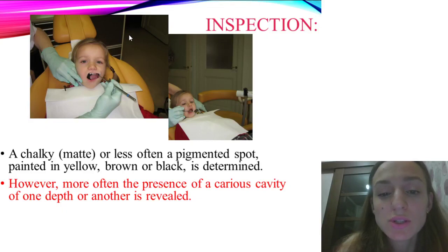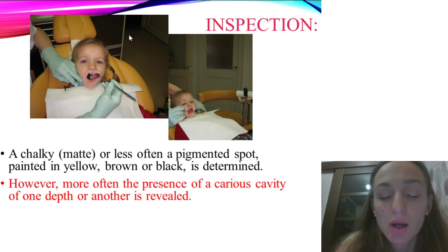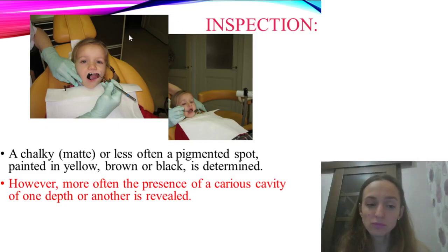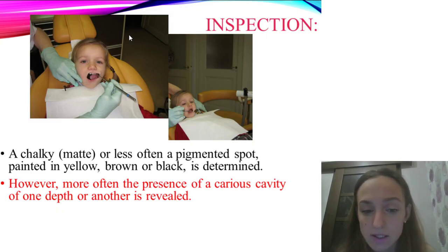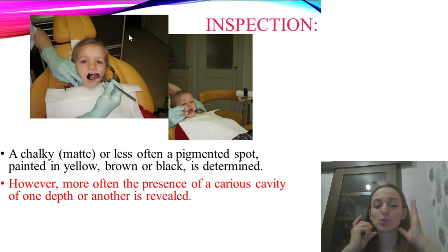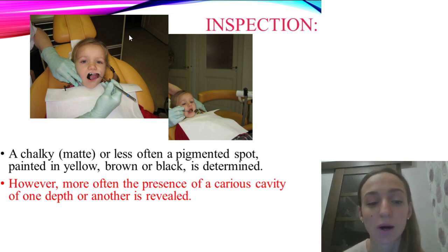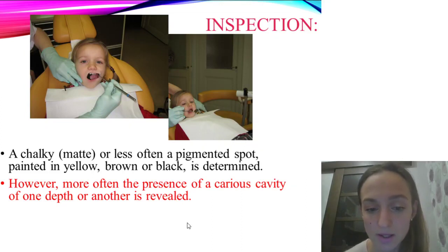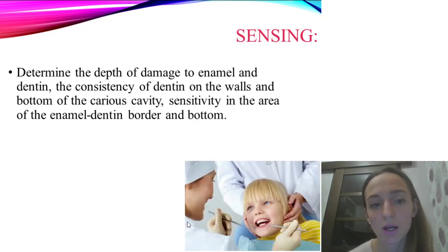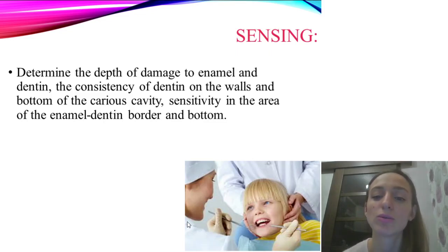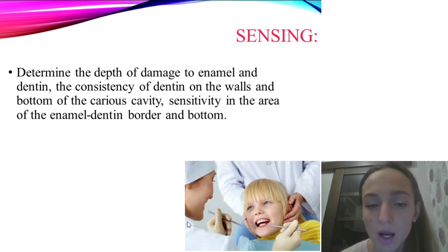Diagnosis of deep acute caries should be determined with special care after careful differential diagnosis with possible complications. During inspection, a chalk-like or less often pigmented spot painted yellow-brown or black can be determined, or more often a carious cavity of varying depth is revealed. Sounding determines the depth of damage of enamel and dentine, the consistency of dentine of the walls and bottom of the carious cavity, and sensitivity in the area of the enamel-dentine border and junction bottom.